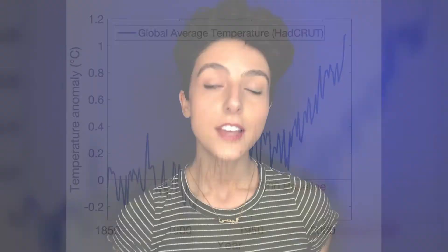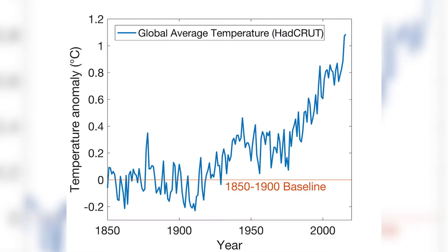Global warming is the gradual increase in the Earth's temperature observed since the pre-industrial period between 1850 and 1900, due to human or anthropogenic activities. This warming is primarily caused by the burning of fossil fuels, which increases the heat-trapping greenhouse gas levels in the Earth's atmosphere.